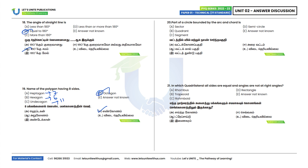Twentieth question: A part of a circle bounded by an arc and a chord is called a segment. Option C. Twenty-first question: In which quadrilateral are all sides equal and angles are not at right angles? The answer is a rhombus. Option E.